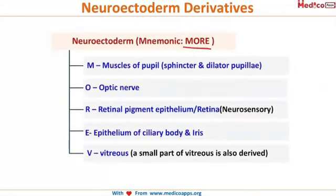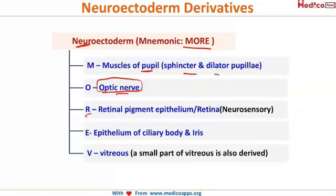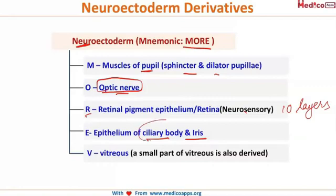For neuroectoderm, the mnemonic is MORE. M stands for muscles of the pupil — the sphincter and dilator pupillae. O is for optic nerve. R is for the retinal pigment epithelium and the retina — all 10 layers including the neurosensory retina and RPE. E is for epithelium of the ciliary body and iris. Wherever you find a V, it represents vitreous.